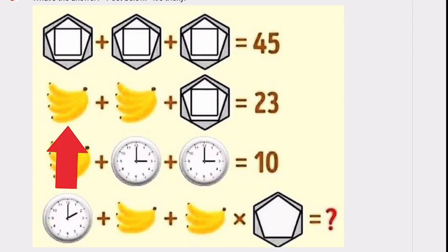Let's move to the next one. A banana bunch plus a banana bunch plus the 15 shape equals 23. So if you were to take that 15 shape and subtract it from 23, you would come up with eight. Each of the banana bunches are worth four.